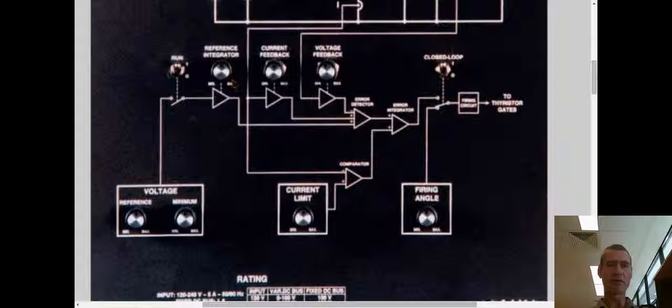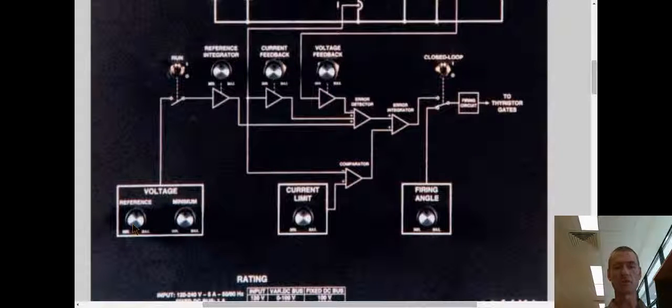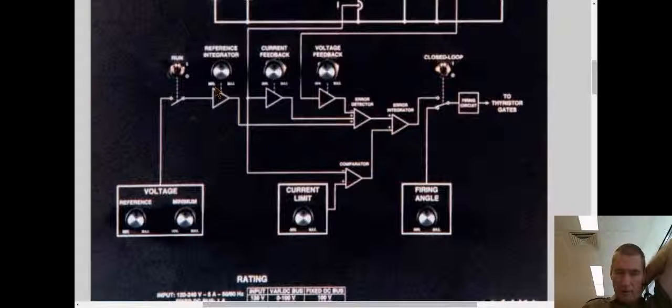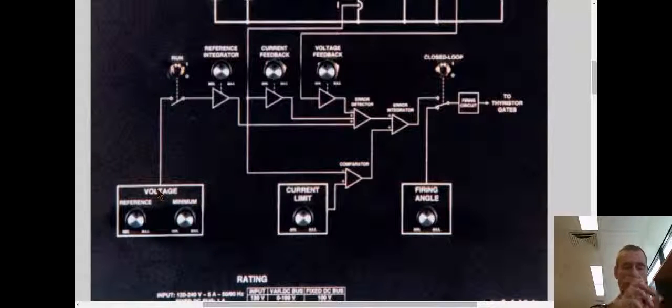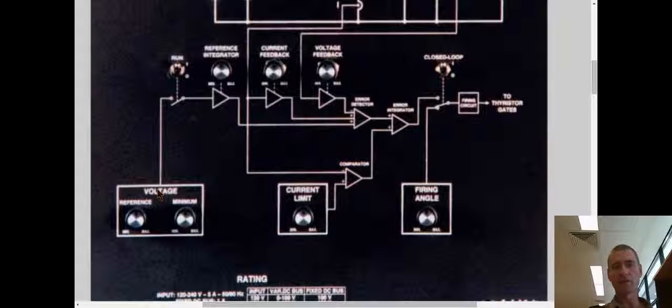The reference integrator determines how quickly the control system responds to changes in the voltage reference. So if the reference integrator is on minimum, that means there's a minimum amount of integration on that input signal. So if you do a sudden change, then a sudden change gets transmitted straight through into the control circuit. And that could lead to the circuit breaker tripping.